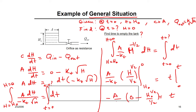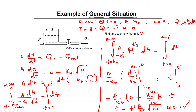The two negatives cancel, giving the final result: T = (2A / K) × √H₀. This is a constant — it will give a time in seconds. That's the time it takes to empty the tank. This is the solution. Most problems are steady state with small deviation around steady state, but this was a general dynamic problem. Thank you very much.